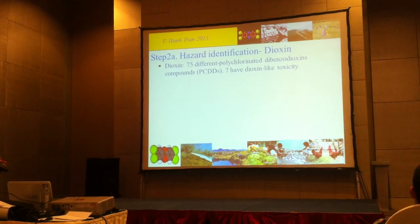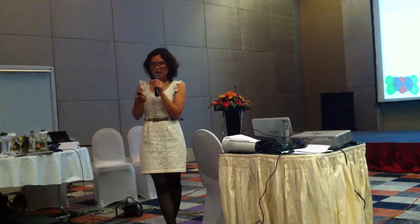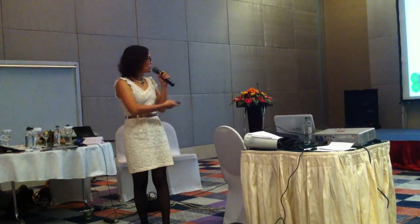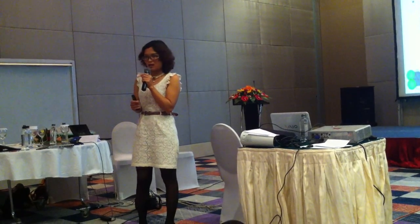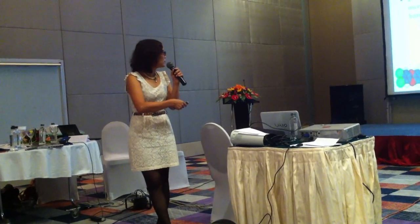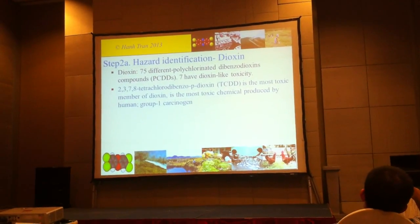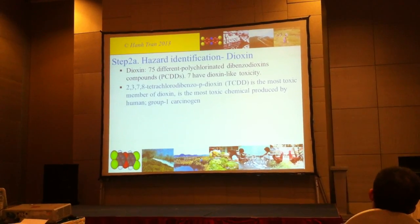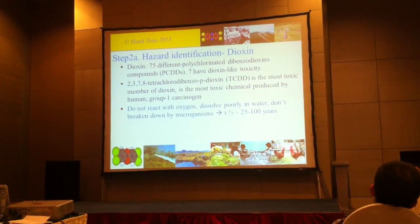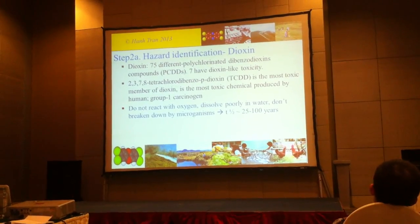For hazard identification: the word 'dioxin' usually makes us think of one chemical, but it is in fact the name of a family of chemicals with about 75 different compounds. Only seven have the dioxin toxicity, and the most toxic one is named TCDD — it is the most toxic chemical ever made by humans. With tiny amounts, our body cannot tolerate it. It is classified as a group 1 carcinogen, and the half-life is extremely long.